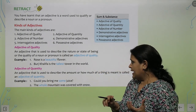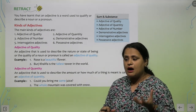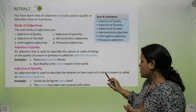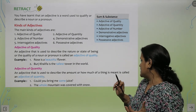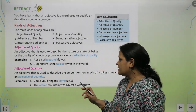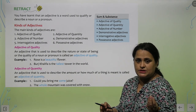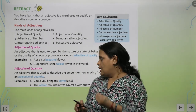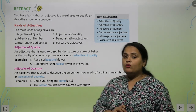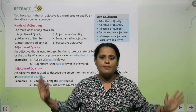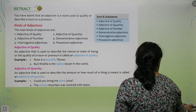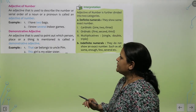Next is adjective of quantity. An adjective that is used to describe the amount — uska kya amount hai — and how much of a thing is meant, is called an adjective of quantity. Examples: 'Could you bring me some juice?' — kitna juice? Some juice, thoda juice. 'The whole mountain was covered with snow' — whole mountain, poora mountain. So it is depicting the quantity.